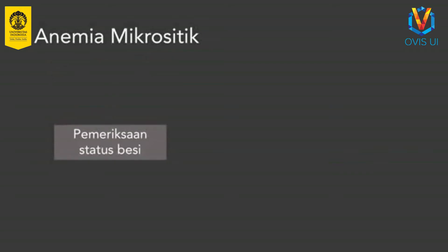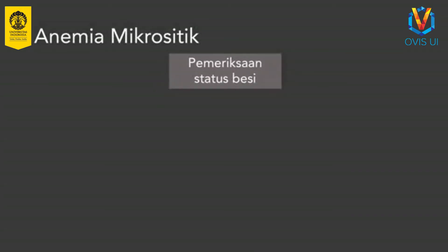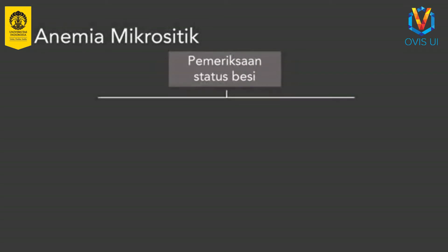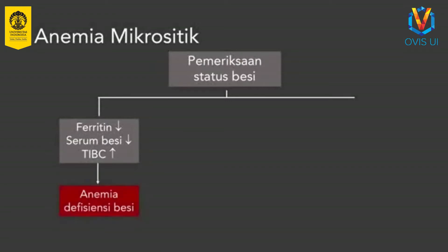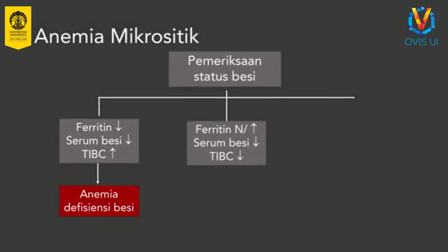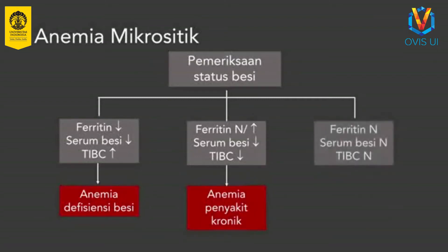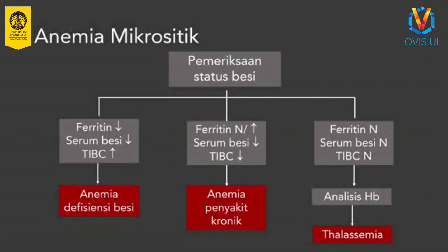Serum besi adalah besi yang berada dalam darah dan terikat pada transferrin. Sementara TIBC adalah kapasitas total transferrin mengikat besi dan meliputi transferrin yang sudah dan belum berikatan dengan besi. Hasil pemeriksaan besi tersebut dapat mengarahkan kita pada diagnosis penyebab anemia mikrositik. Jika ditemukan feritin dan serum besi menurun namun TIBC meningkat, kemungkinan diagnosisnya adalah anemia defisiensi besi. TIBC dapat meningkat sebagai bentuk kompensasi tubuh terhadap kadar besi yang rendah, sehingga tubuh berusaha meningkatkan produksi transporter besi. Jika ditemukan feritin normal atau meningkat sementara serum besi menurun dan TIBC menurun, diagnosisnya kemungkinan adalah anemia penyakit kronik. Jika status besi ditemukan normal namun terdapat anemia mikrositik, perlu dilakukan pemeriksaan lebih lanjut dengan elektroforesis Hb untuk menegakkan diagnosis thalassemia.